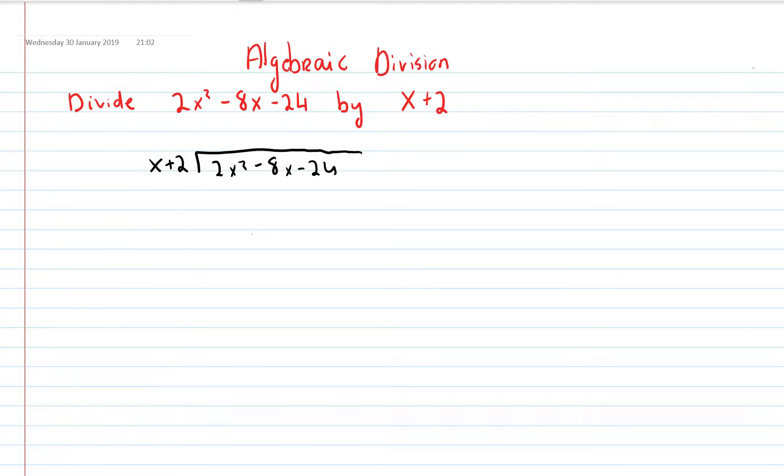So we're going to ask ourselves, what do I have to multiply x by to get 2x squared? The answer would be 2x.